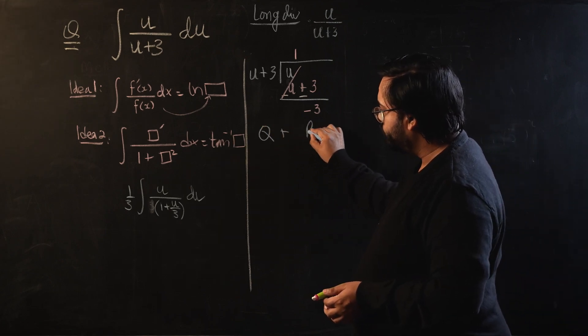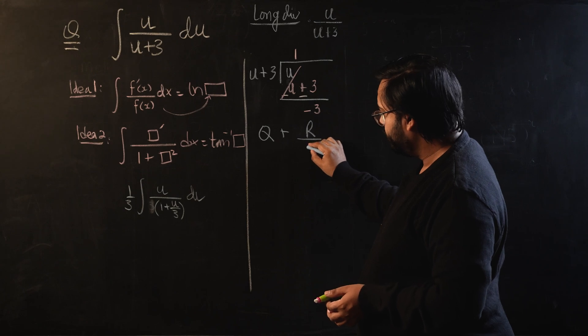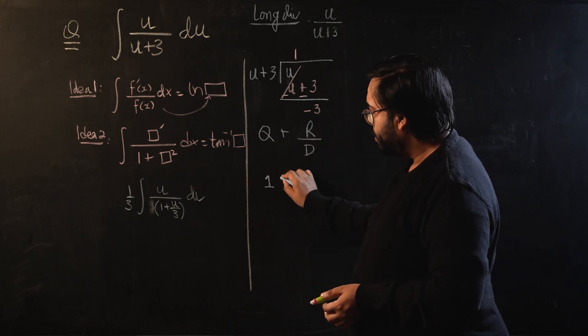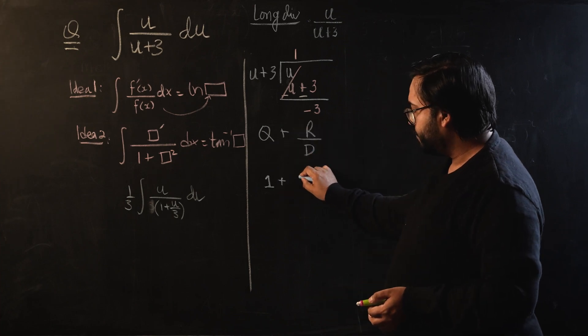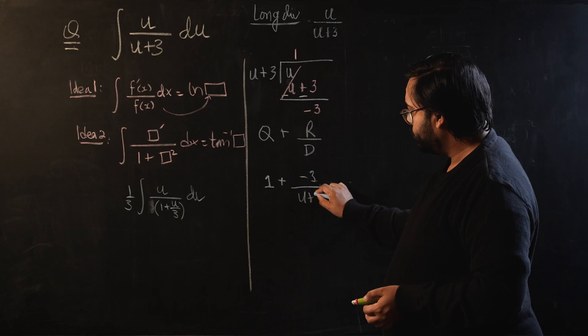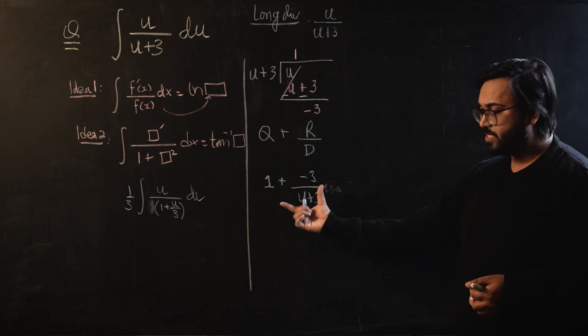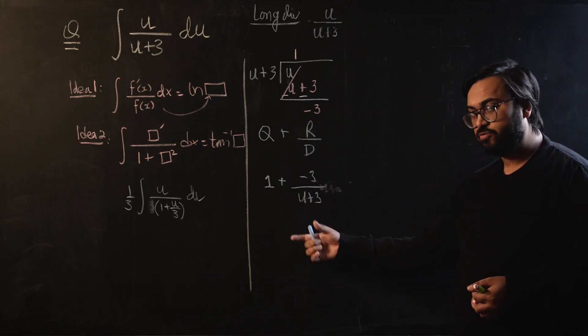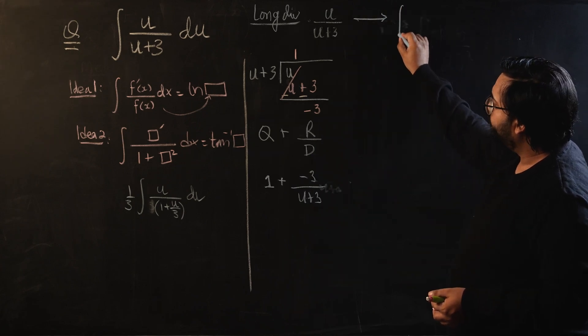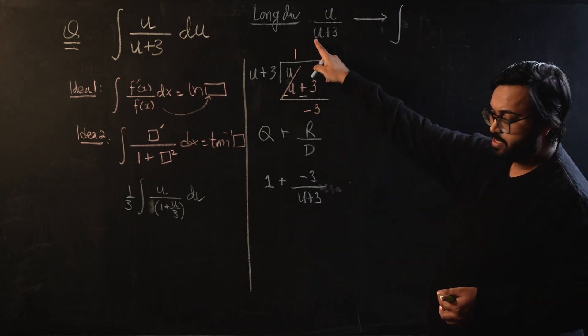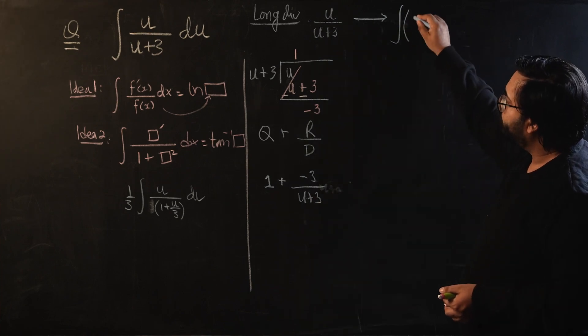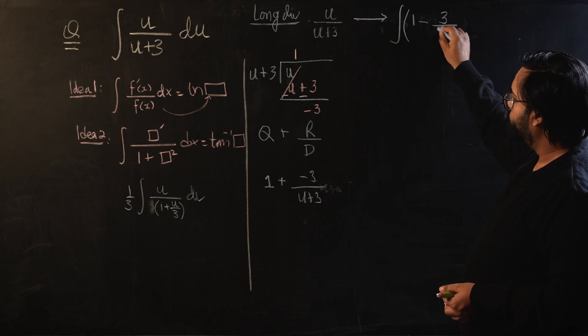We know that after long division we can write it in the form of quotient plus new remainder over divisor. So quotient is 1, plus remainder is -3 over divisor is u+3. So now we can see we have split this fraction into two different parts. I can say that this fraction is now, if I want the integral of this thing, I actually want the integral of these two terms.